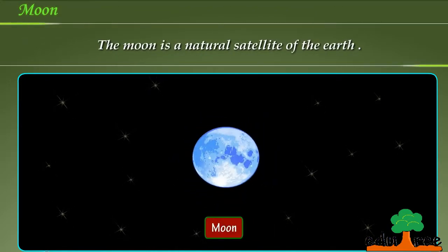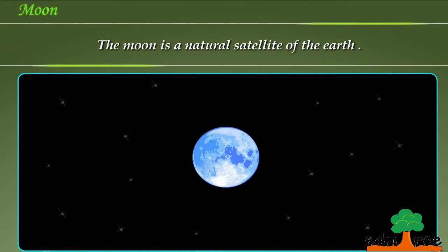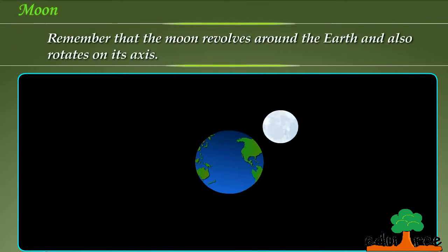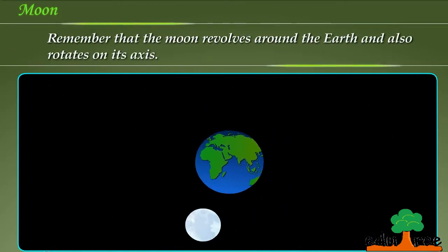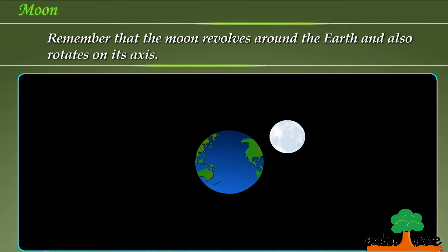The moon is a natural satellite of the earth. Remember that the moon revolves around the earth and also rotates on its axis.